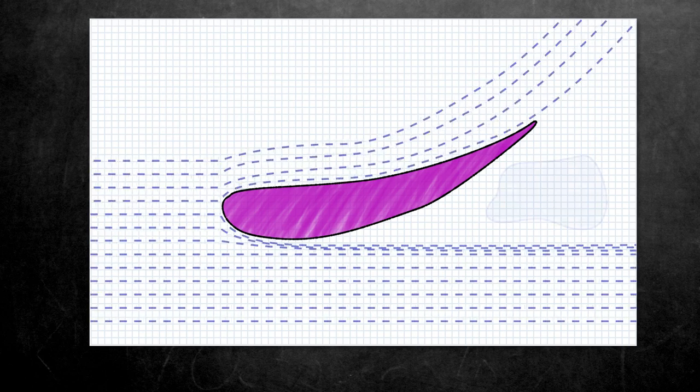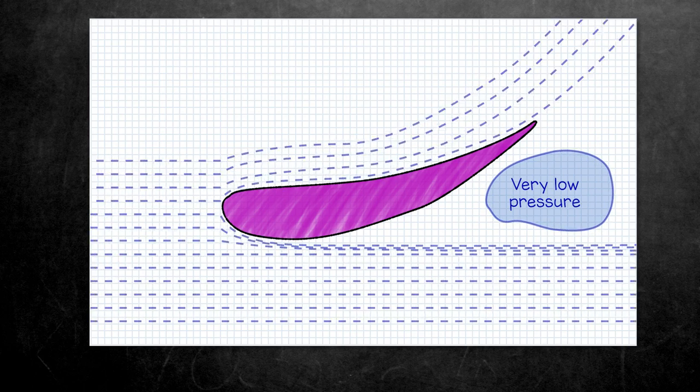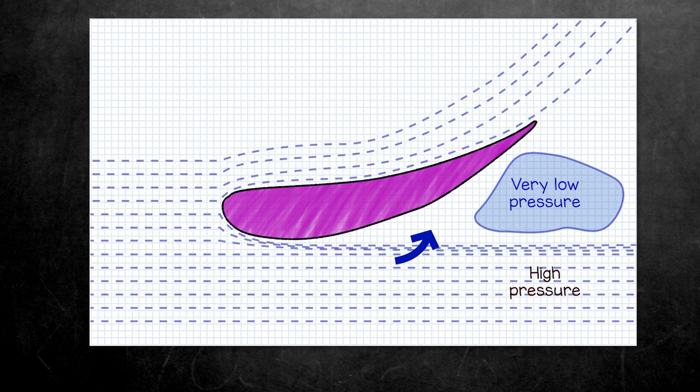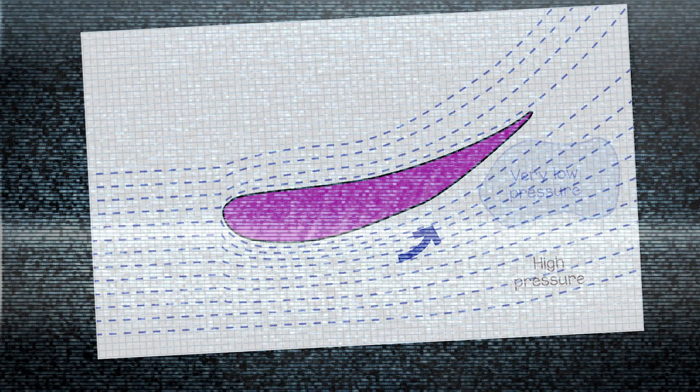Because if there's no or very little air here, then it means this is a very low pressure area. And as we discussed previously, high pressure air will flow into areas of low pressure. So all this high pressure, high energy air is naturally going to bend into this pocket.